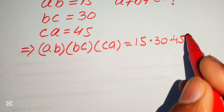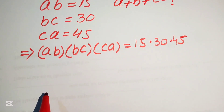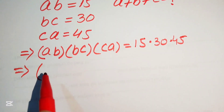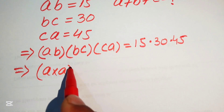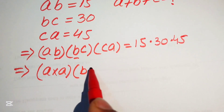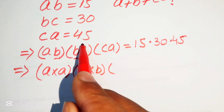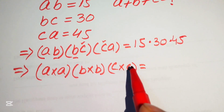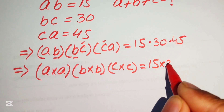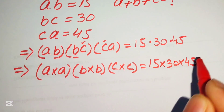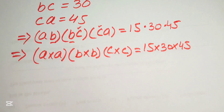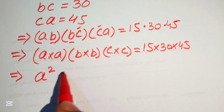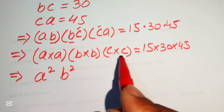Now we rearrange the terms. We group a×a, b×b, and c×c, giving us a² × b² × c² on the left hand side, and on the right hand side we have 15 × 30 × 45.